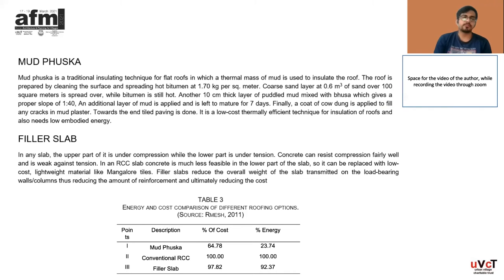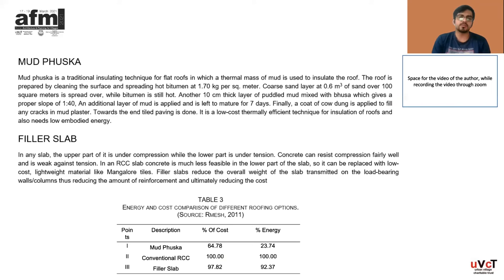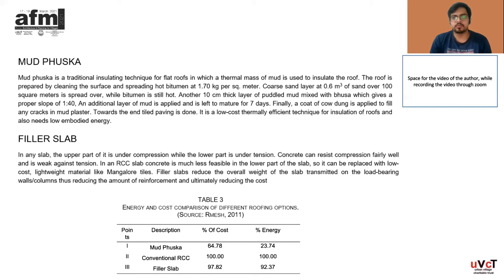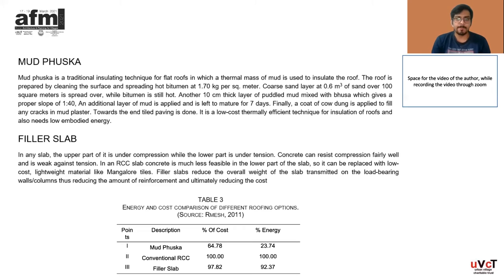The next technique is the filler slab. In any slab, the upper part is under compression while the lower part is under tension. Concrete can resist compression fairly well but is weak against tension. In an RCC slab, concrete is much less effective in the lower part of the slab, so it can be replaced with low cost, lightweight material like Mangalore tiles. Filler slab reduces the overall weight of the slab transmitted on load-bearing walls and columns, thus reducing the amount of reinforcement and ultimately reducing the cost of the overall structure. Table 3 gives the energy and cost comparison of different roofing options.